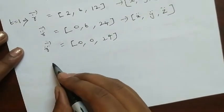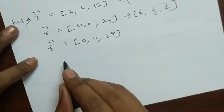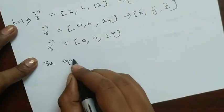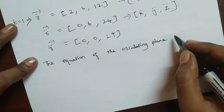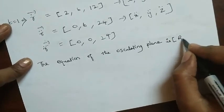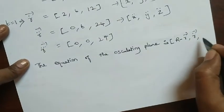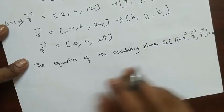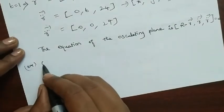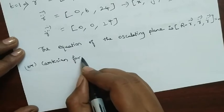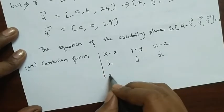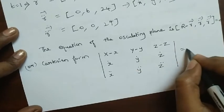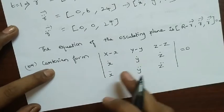Since we are given 3-point contact, we need to find the equation of the osculating plane. The formula is (r − r₀) · (r̊ × r̈) = 0. In Cartesian determinant form this is: |x−x₀, y−y₀, z−z₀; ẋ, ẏ, ż; ẍ, ÿ, z̈| = 0. This is the formula for the equation of the osculating plane.